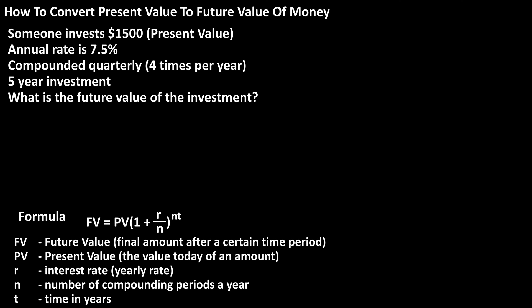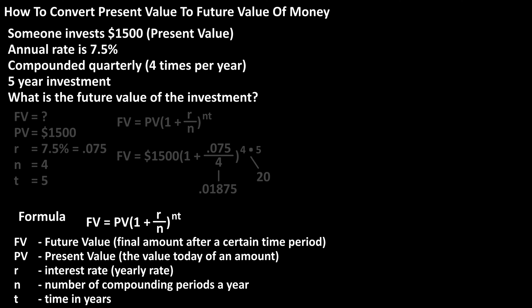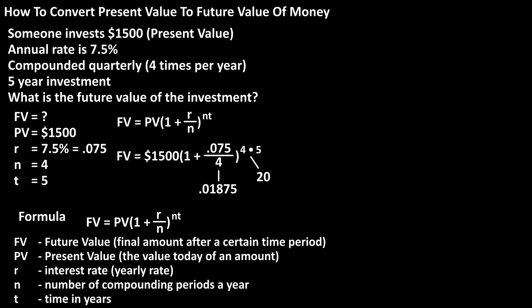Here is the future value formula and all of the definitions for all of the variables. We plug into the formula, and we have future value equals $1,500 times the quantity 1 plus 0.075 — the decimal value of 7.5% — divided by 4, raised to the 4 times 5.